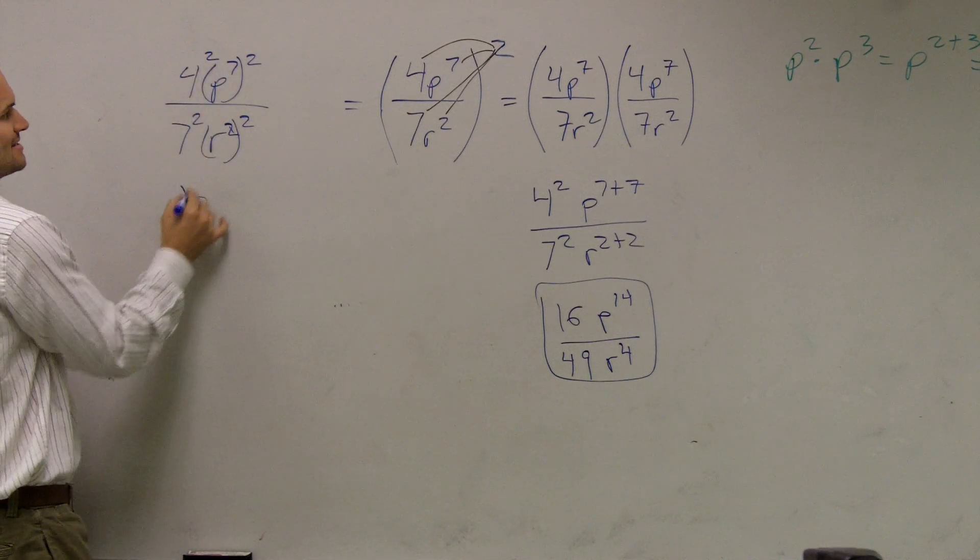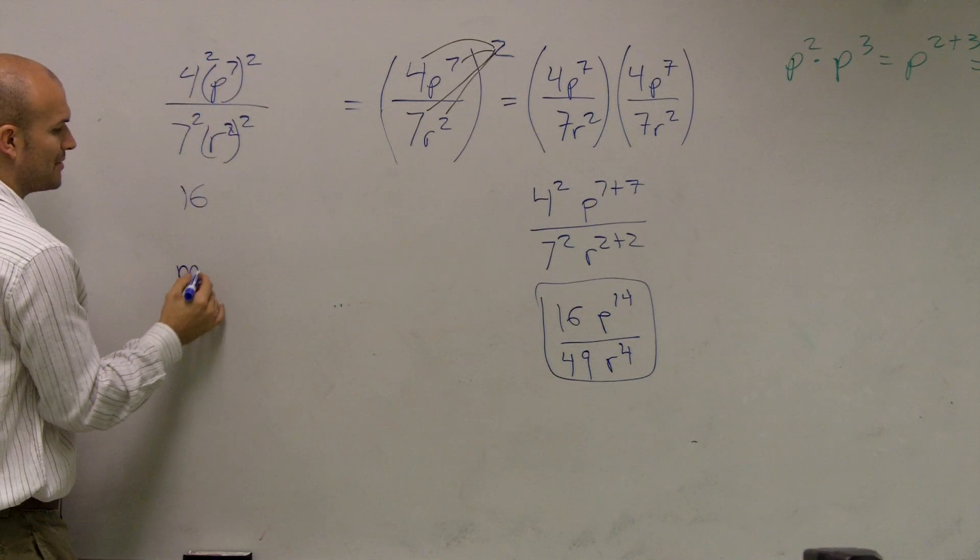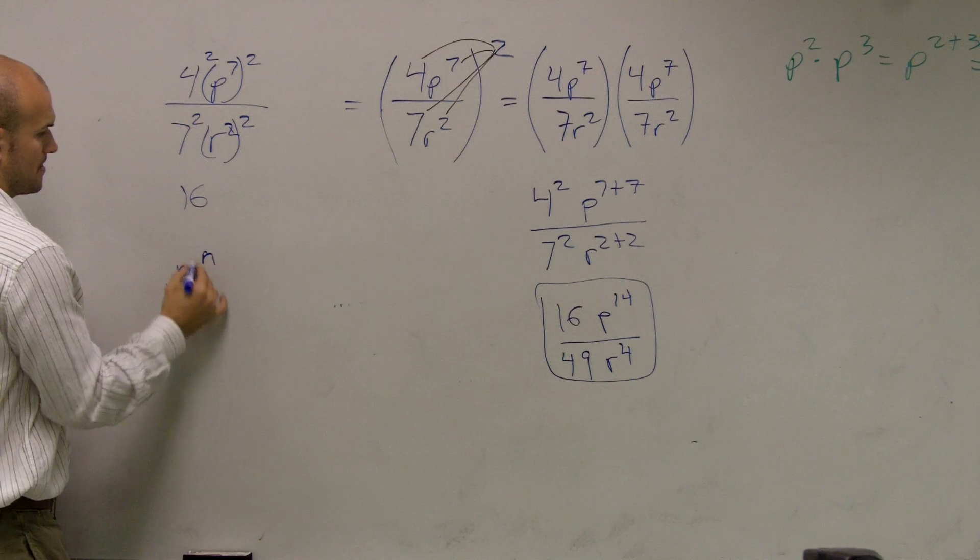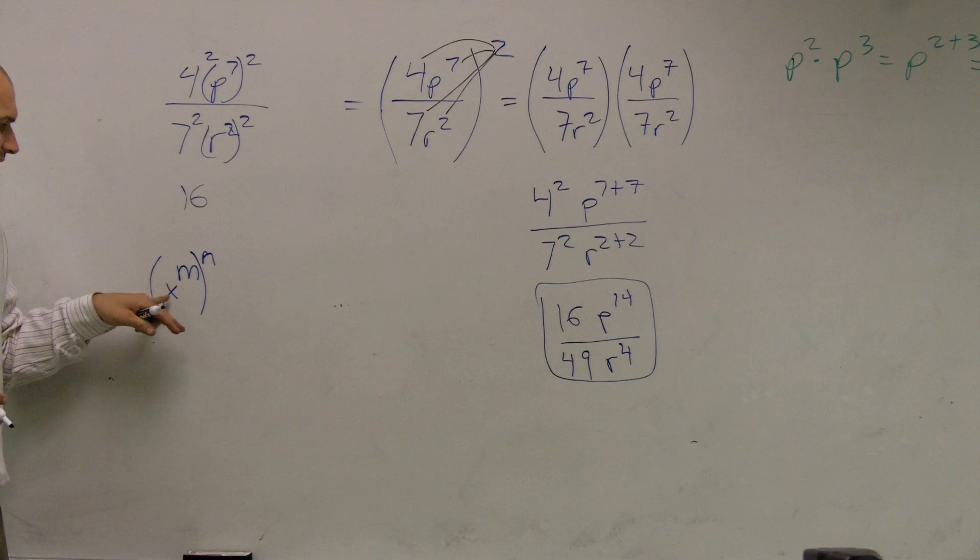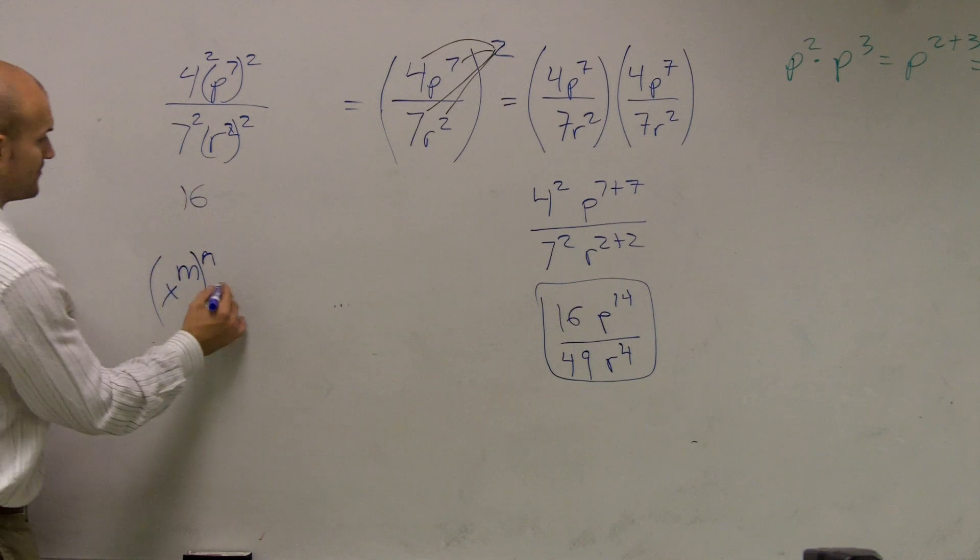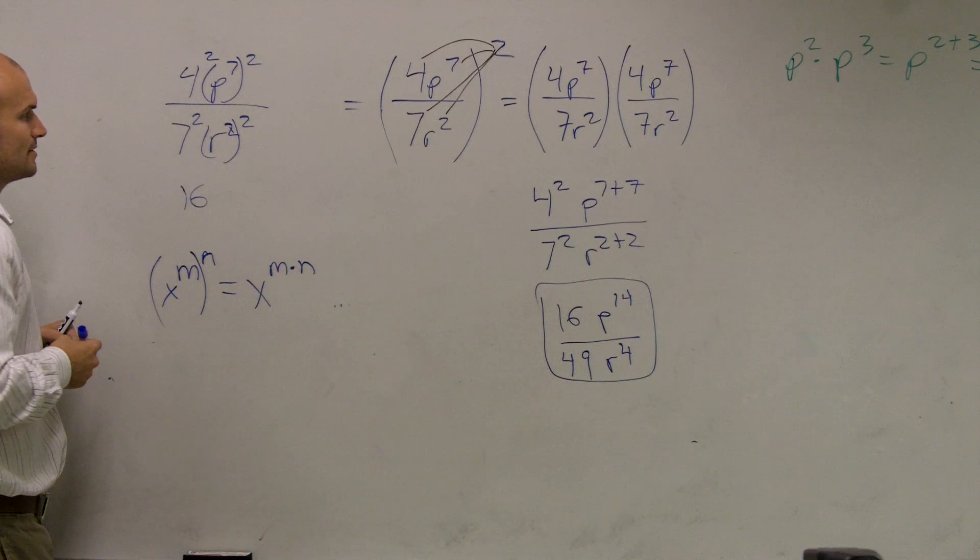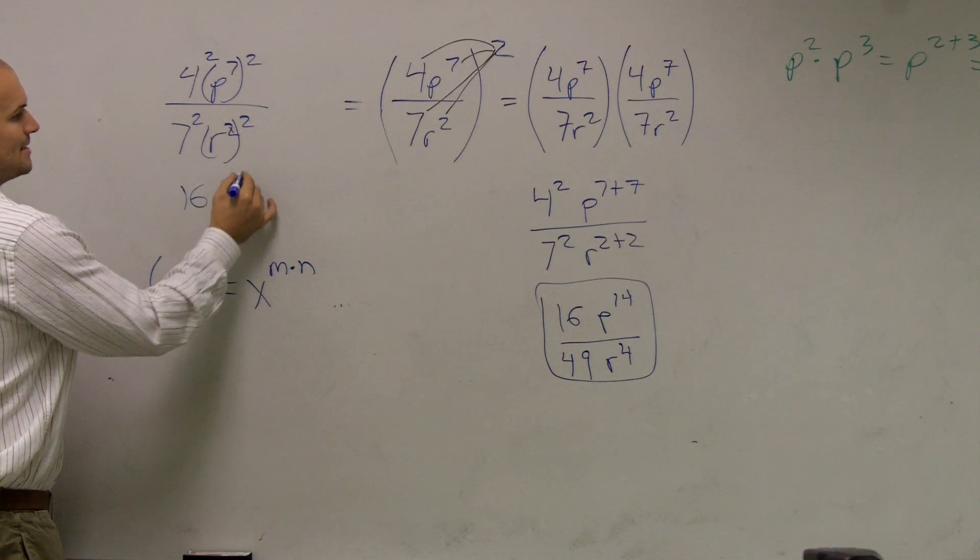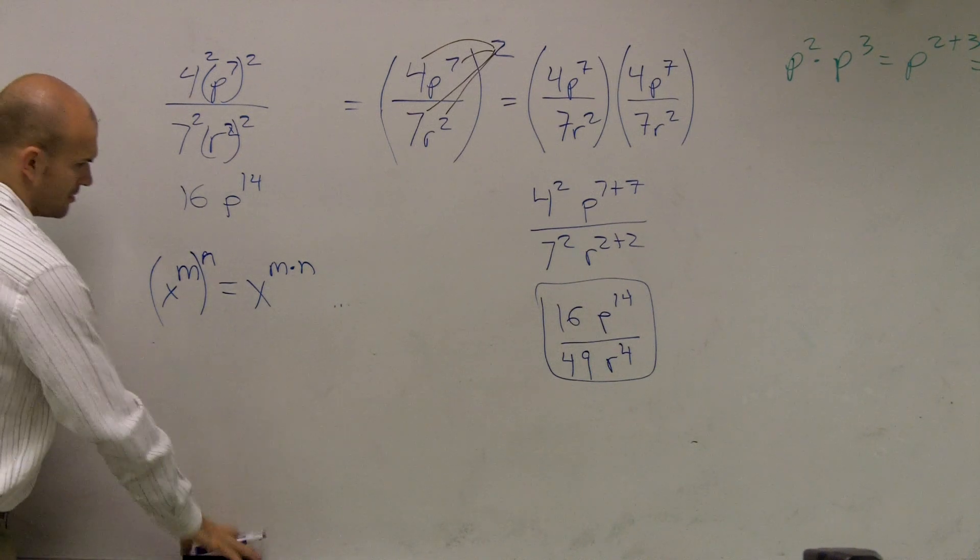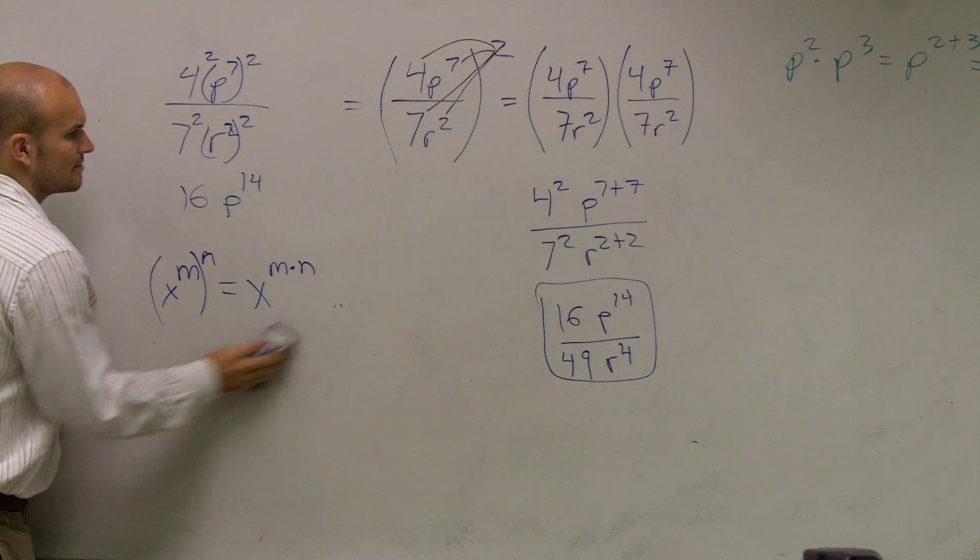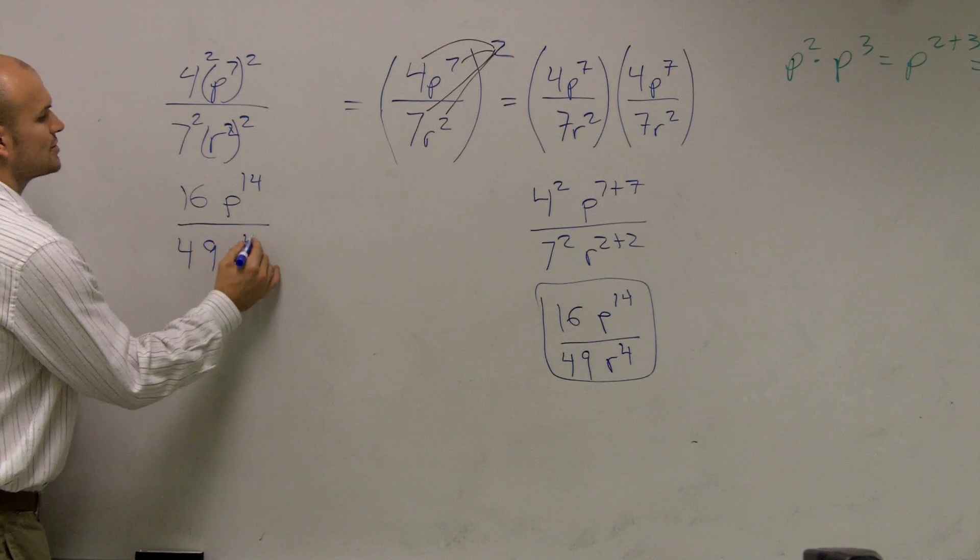4 squared again is 16, and what's p to the 7 raised to the second power? Well, you need to remember your power rules. The power rule says any number raised to an exponent raised to another exponent equals the variables multiplied by each other. So I get 16, p to the 14th, and then divided by 7 squared, which is 49, r to the 4th.